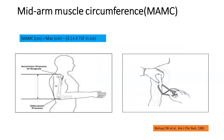Then comes mid-arm muscle circumference (MAMC). First we calculate the mid-arm circumference, measured at the midpoint between the acromion process of the scapula and the olecranon. From that, we subtract 3.14 times the triceps skinfold thickness to obtain the MAMC. It has age- and sex-defined cutoffs, and if the value falls below those percentile cutoffs, we can assess whether the patient is adequately nourished or malnourished.